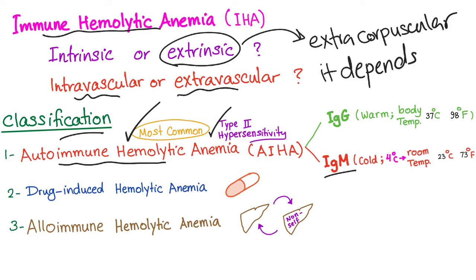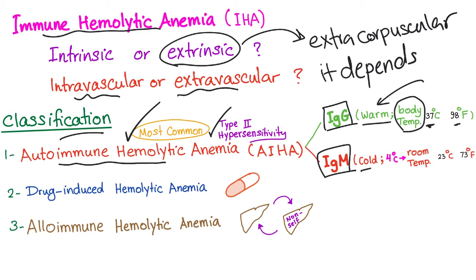Autoimmune hemolytic anemia can be due to either IgG or IgM antibodies. We call IgG antibodies warm antibodies because they work at body temperature — 37 degrees Celsius or 98 degrees Fahrenheit, which is warm. IgM antibodies are cold antibodies; they work at 4 degrees Celsius up to room temperature, about 23 degrees Celsius or 73 degrees Fahrenheit.